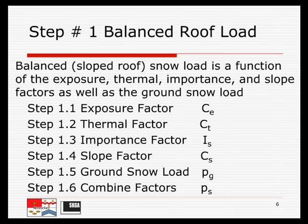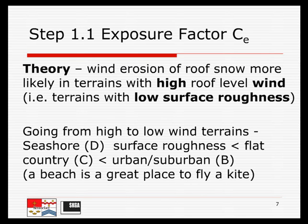The first sub-step is the exposure factor. The theory behind the exposure factor is the following: wind erosion of roof snow — that is, the wind blowing snow off the roof — is more likely when the wind speed is high, and you get high wind speeds where the surface roughness is low.